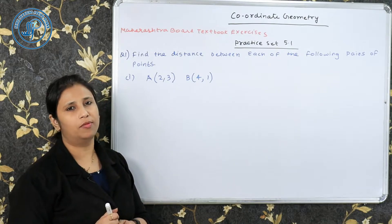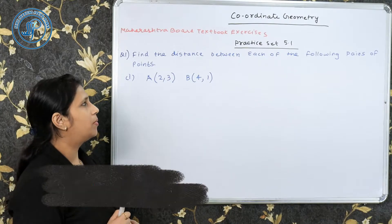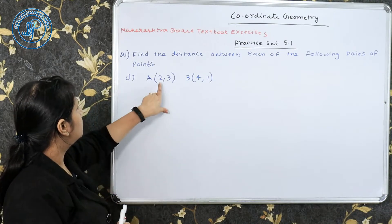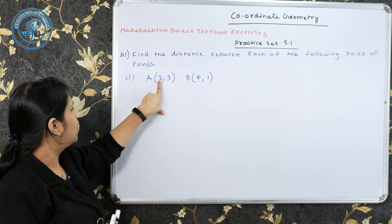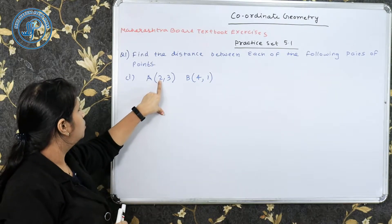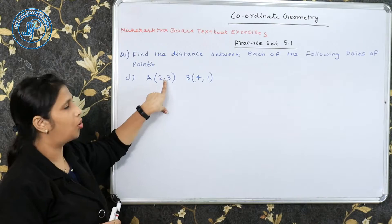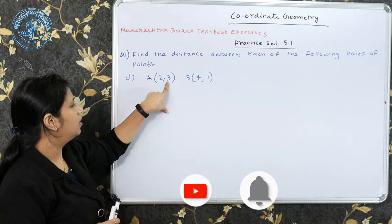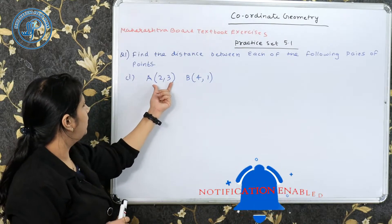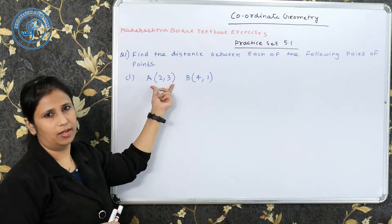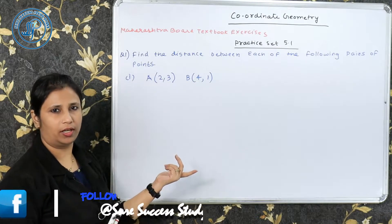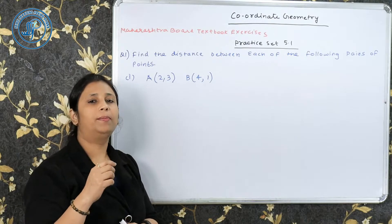In coordinate geometry we discuss and represent coordinates. The first thing to know is what we call the x-coordinate and y-coordinate. We always write the x-coordinate first, then the y-coordinate. We work with points in the x-y plane, and when there are two points in the x-y plane, we need to calculate the distance between them.